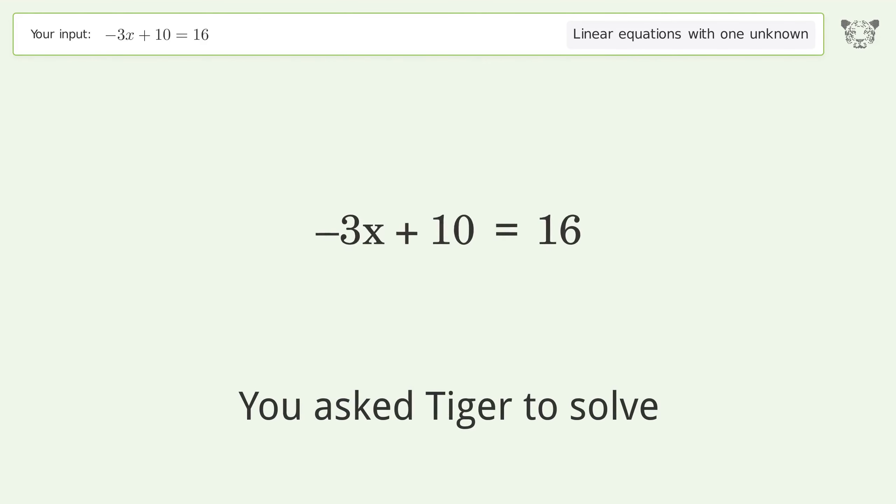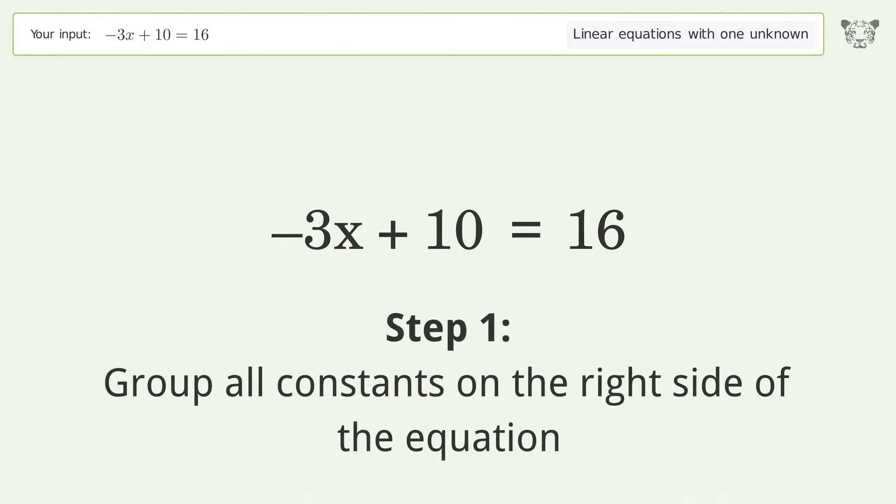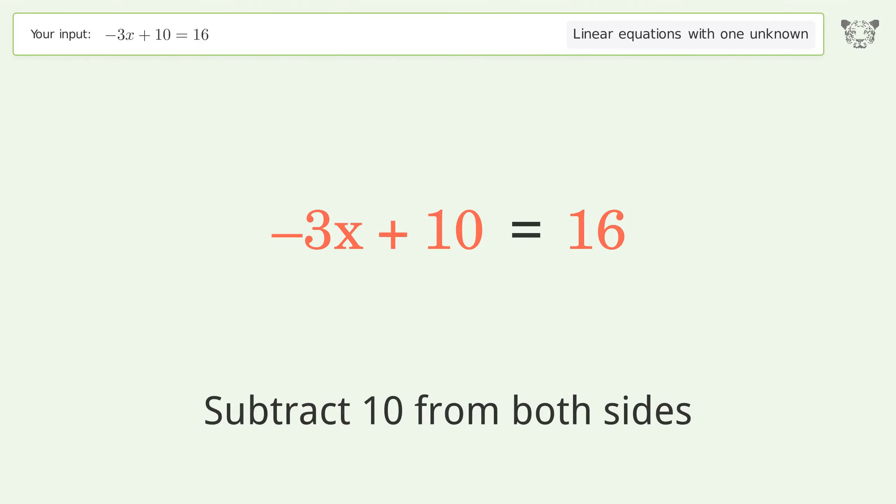You asked Tiger to solve this. This deals with linear equations with one unknown. The final result is x equals negative 2. Let's solve it step by step. Group all constants on the right side of the equation. Subtract 10 from both sides.